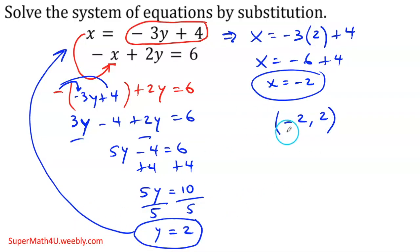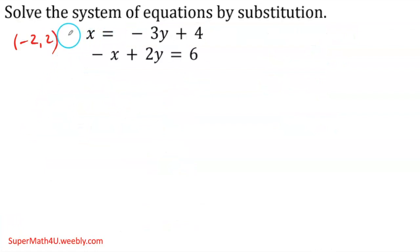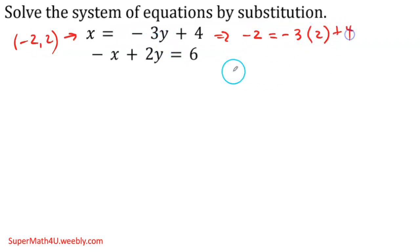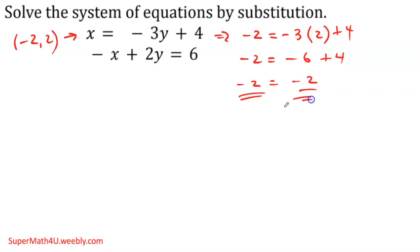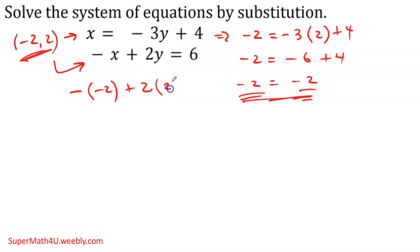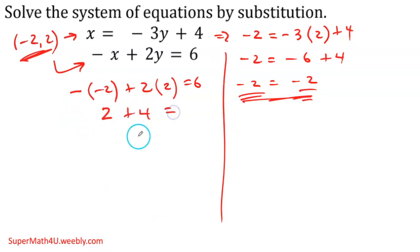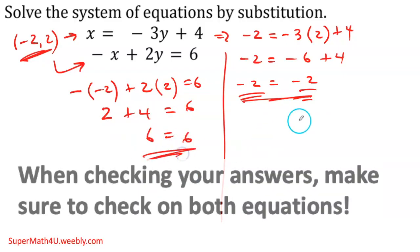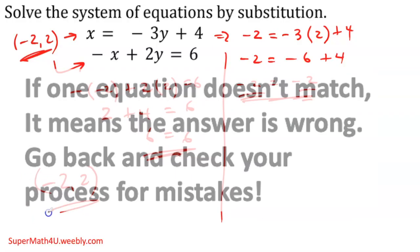You always want to double check your answers. Let's plug back into the first equation: x is negative 2, y is 2 — negative 2 equals negative 3 times 2 plus 4, which gives negative 6 plus 4, which is negative 2. Same on both sides, so this answer is working. Now the second equation: negative x plus 2 times y should equal 6. Negative of negative 2 is positive 2, plus 2 times 2 is 4 — 2 plus 4 is 6. It works in both equations, so my answer is right.